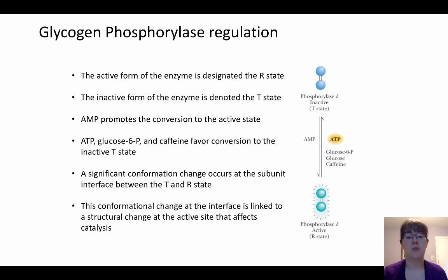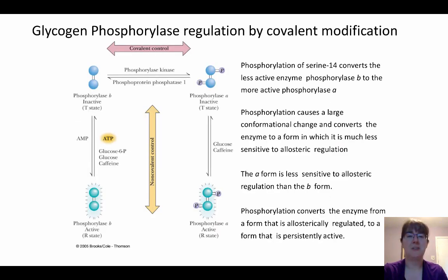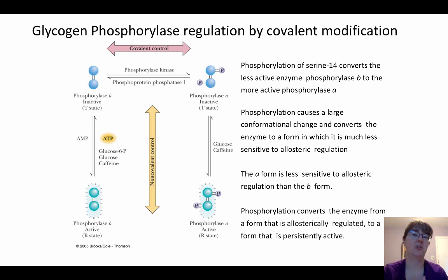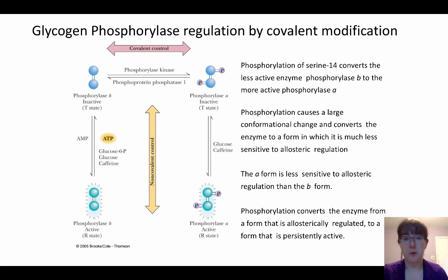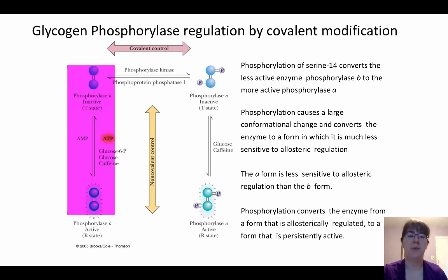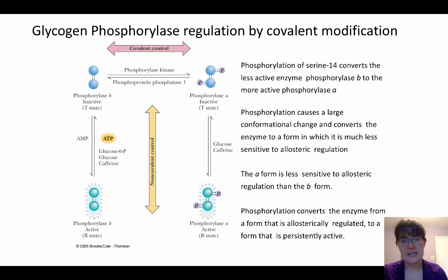That conformational change is linked to those active sites that affect catalysis. There is a serine-14 residue that can be phosphorylated. That phosphorylation is so significant that they actually name the phosphorylated form phosphorylase A and the non-phosphorylated form phosphorylase B, because A and B have distinct differences in both activity and conformation. Phosphorylase B on the left shows AMP as an activator, while ATP, glucose-6-phosphate, glucose, and caffeine are all inhibitors.